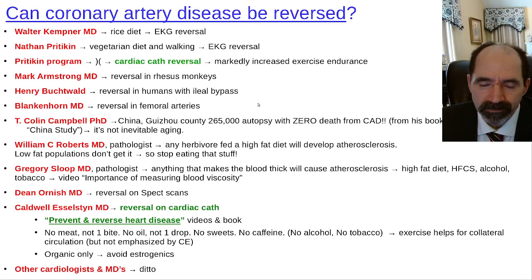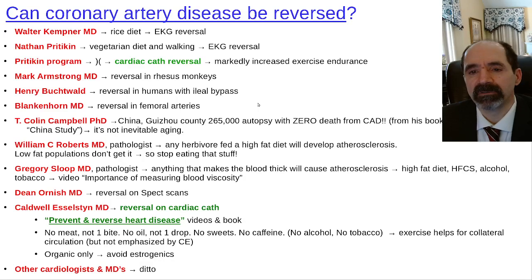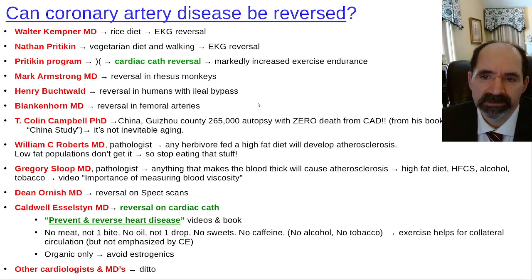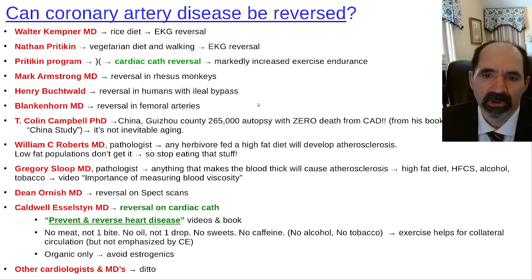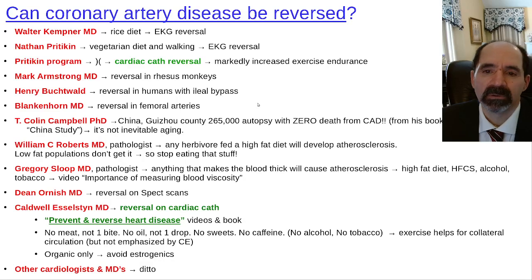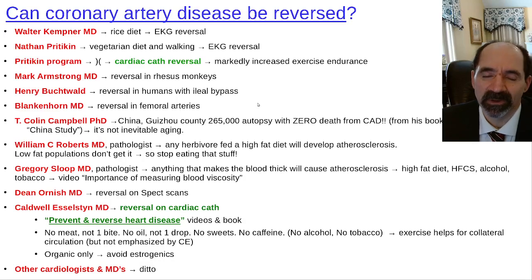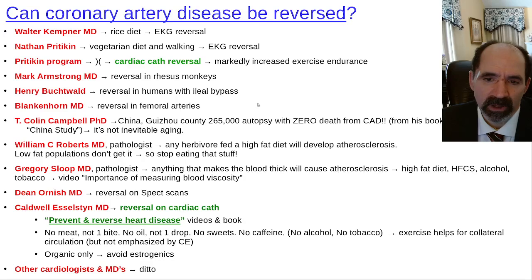Nathan Pritikin reversed his own EKG findings and subsequently had cases of cardiac cath reversal of atherosclerotic findings from his Pritikin program of diet and exercise. Mark Armstrong was a researcher who showed reversal of atherosclerosis in the arteries of monkeys — another primate. Henry Buchwald performed intestinal bypass surgeries in humans as a way to lower atherosclerosis and showed some reversal. Blankenhorn showed reversal of atherosclerosis in the femoral arteries of the thigh.